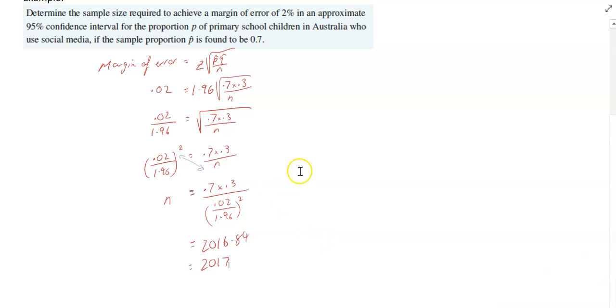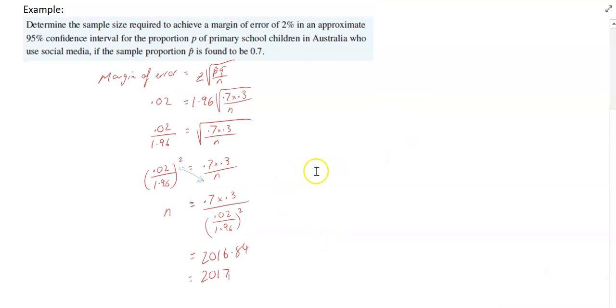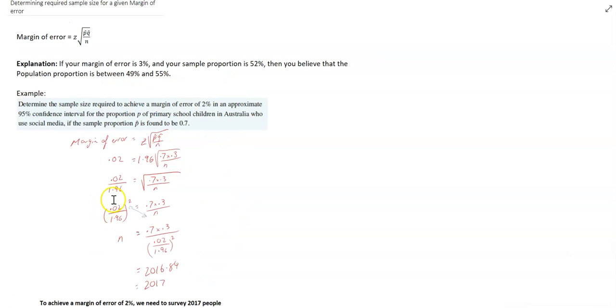So we need a sample size of 2017 people so that we can have an approximate margin of error of 2%. In the real world, you've got to work with some assumptions. They would have had to assume that their sample proportion would be approximately 0.7 before they started.